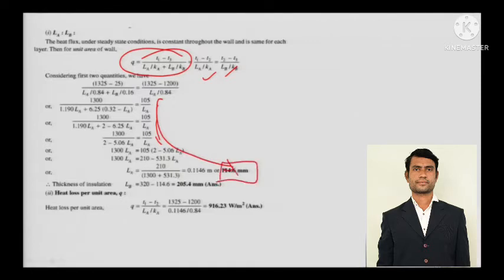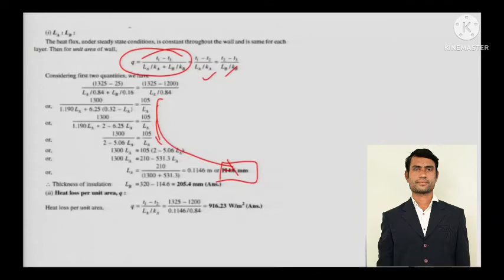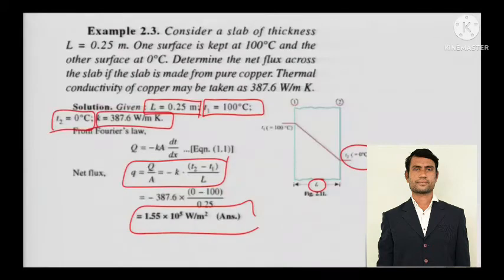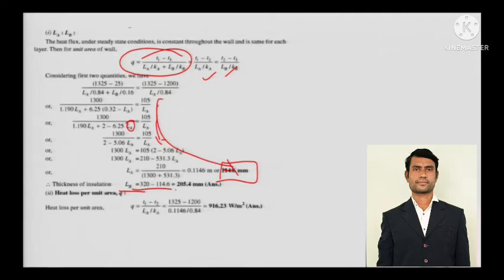When LA is unknown and everything else is known, you can calculate LA — the thickness of the fire brick. The thickness of the insulation LB will be 320 mm minus LA, so you will get LB.